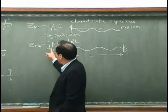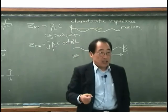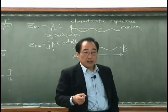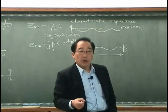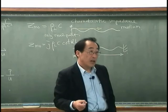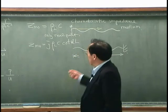If this is purely imaginary, it means when I excite one end of a string with pressure P, then the velocity always has a phase difference of 90 degrees.